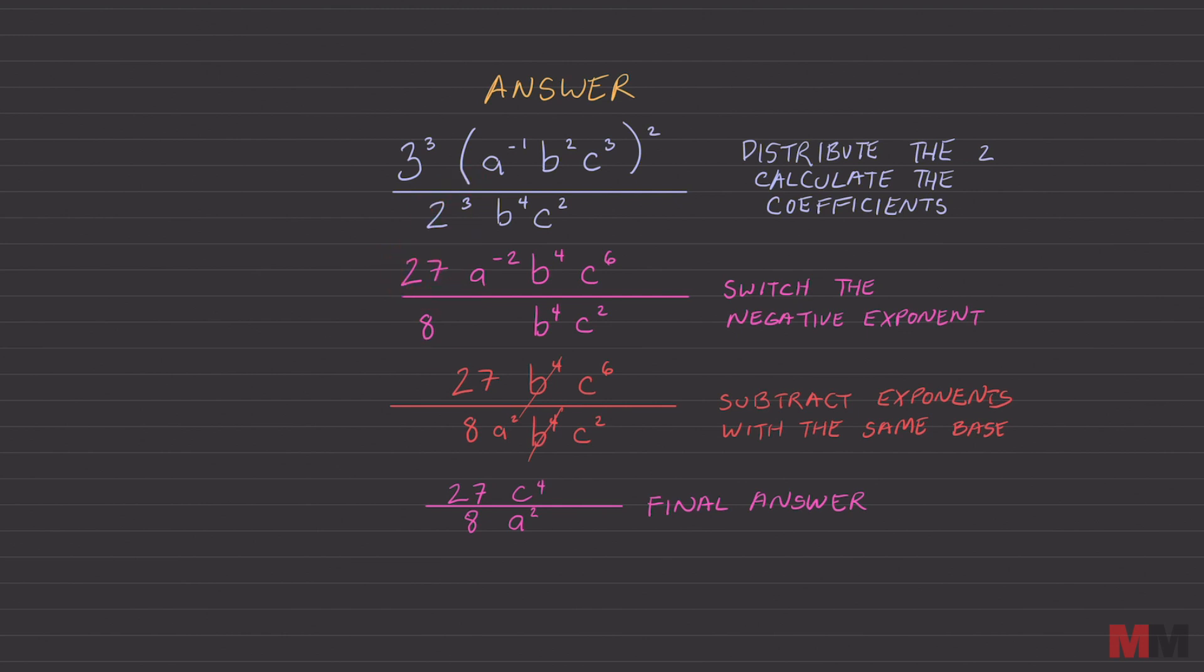From there my strategy was to switch my negative exponent. And there was only one, which is this. I moved it right to the bottom. We're almost there. All you got to do is subtract exponents with the same base. Sometimes you'll get something like this. 4 minus 4 is 0. So technically those cancel out. They cancel each other out. And c6 and c2 will get me c4.